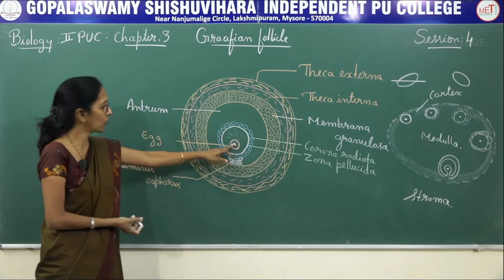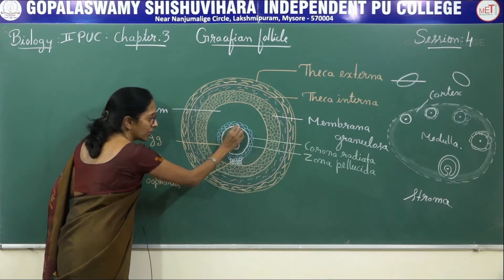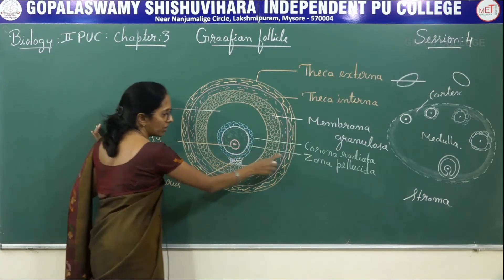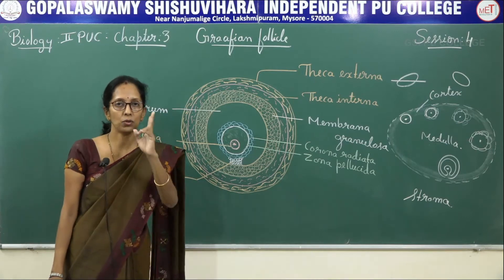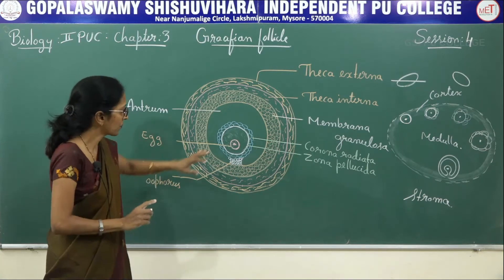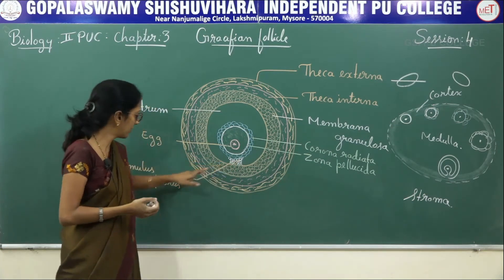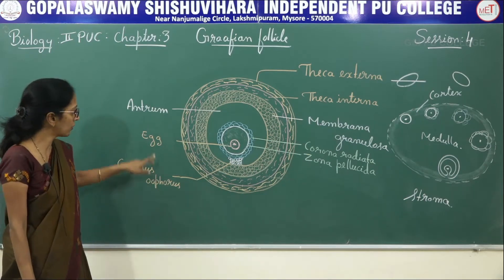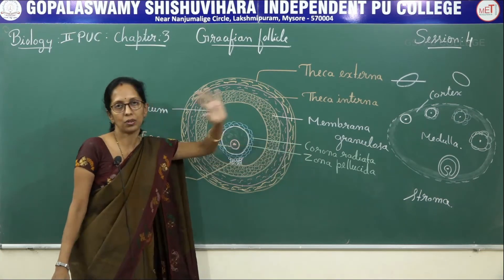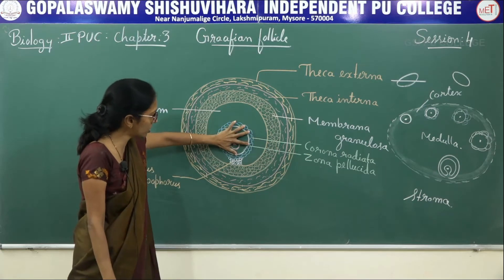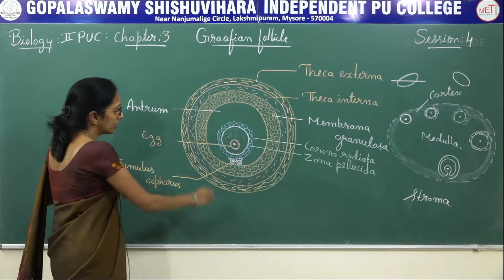Coming to the structure of the graafian follicle: the egg is present in the centre, surrounded by follicular cells. The egg is surrounded by two layers — the outer zona pellucida, and external to this there is a presence of corona radiata. The egg with its corona radiata is present in a bed of follicle cells which gives protection, and this region is said to be the cumulus oophorus.